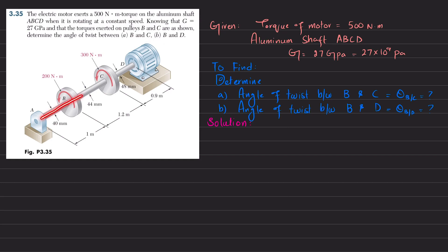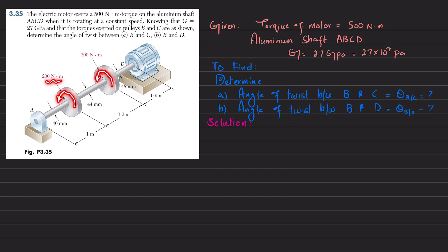You can see this is the shaft ABCD where there are two pulleys B and C. The motor exerts 500 Newton-meters, the torque on pulley B is 200 Newton-meters, and on pulley C it is 300 Newton-meters. We need to find the angle of twist in shaft BC and the angle of twist between B and D. Let's start with the solution.